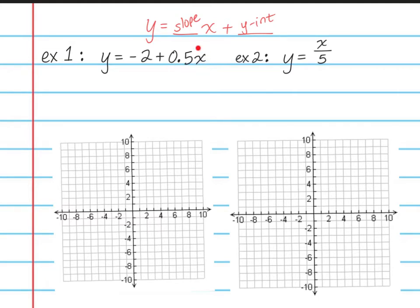The first thing I notice is that the 0.5x, the x part, is in the wrong place — usually we write that first. So I'm just going to rewrite this as y equals, and flip these around. So 0.5x is going to come first, and then I still have a minus 2, so that's going to be minus 2.